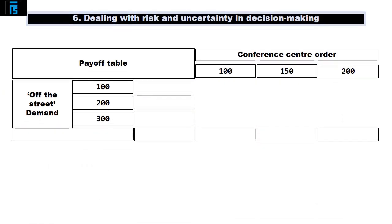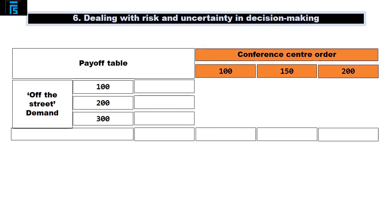Jack can build a payoff table to help him with this. It has the decision variable across the top — he has control over this — and the risky variable down the side — he doesn't have control over this. We then fill in the table.